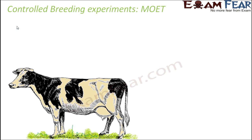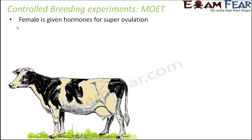The next type of controlled breeding experiment or artificial breeding technique is MOET. What is MOET? The full form is Multiple Ovulation Embryo Technique. What happens in MOET? As the name suggests — multiple ovulation. Normally, during ovulation, when the egg is released by the ovary, a female will release one egg every month.